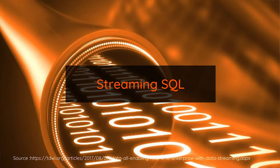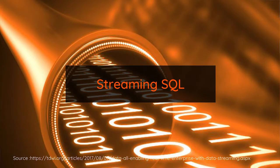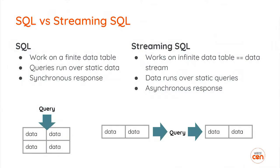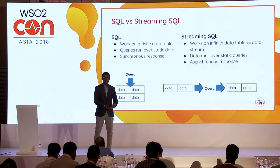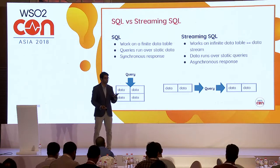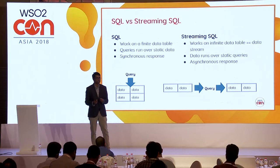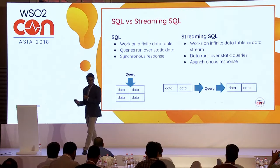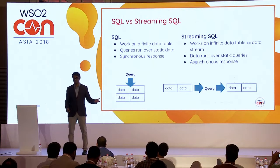If you compare streaming SQL with normal SQL, the difference is that in normal SQL the data is stored in a database and you pass a query to get results. But in streaming SQL it is completely upside down — we store the query and flow the data over it. Whenever there is a matching event, you get to know about it. It is more real-time, whereas normal SQL is more of a batch kind of work.